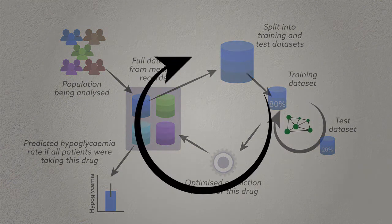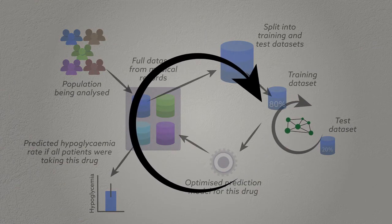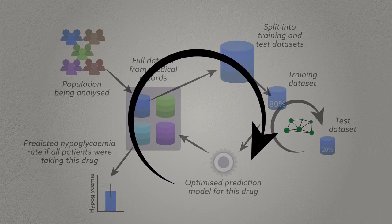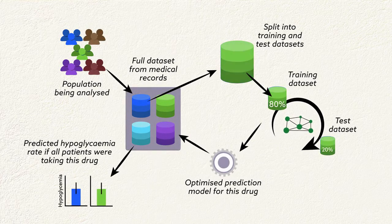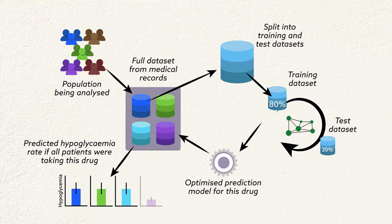This whole process is repeated many times for a particular basal insulin, to obtain estimates of variability, and each basal insulin-specific hypoglycemia prediction model is generated in the same way.